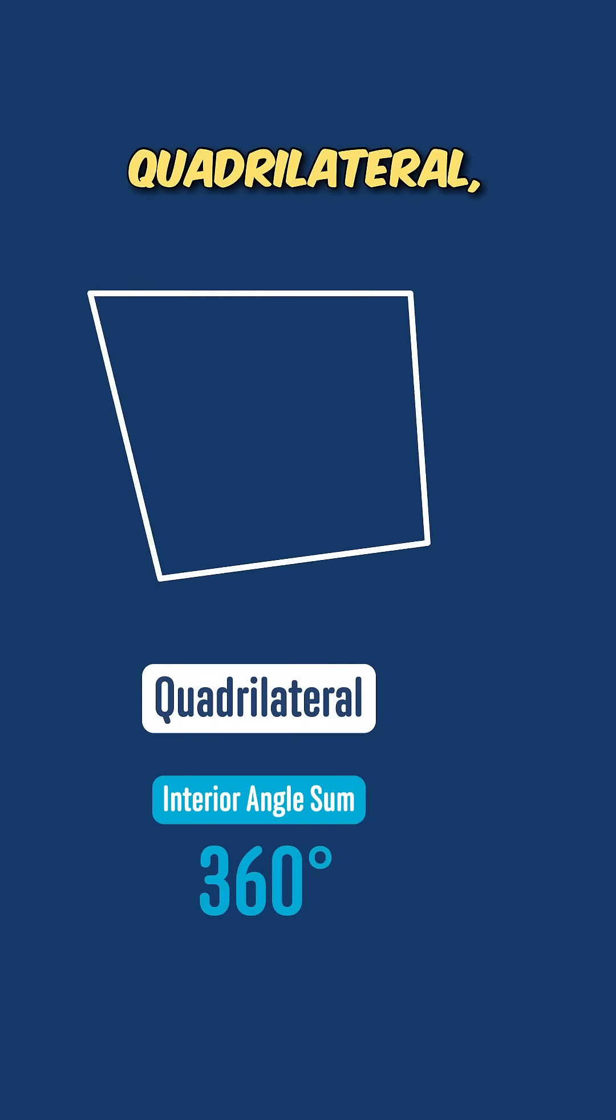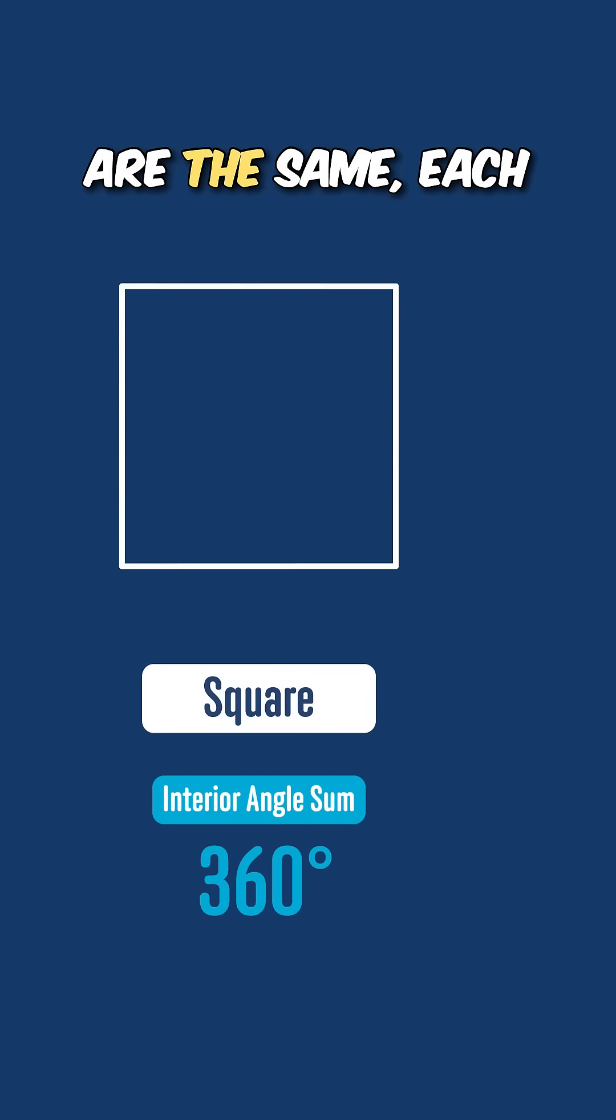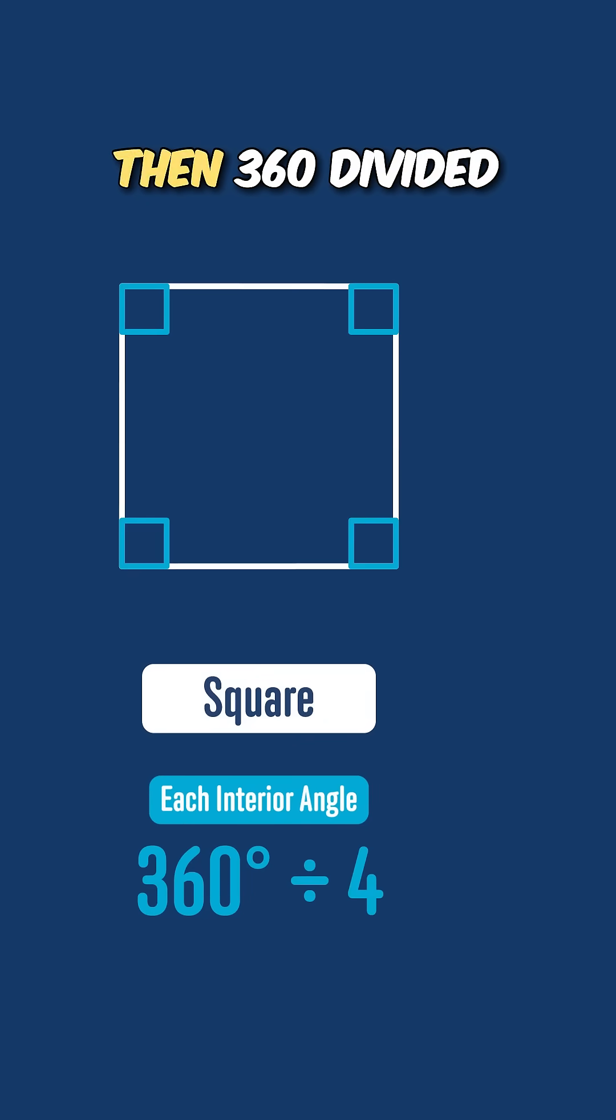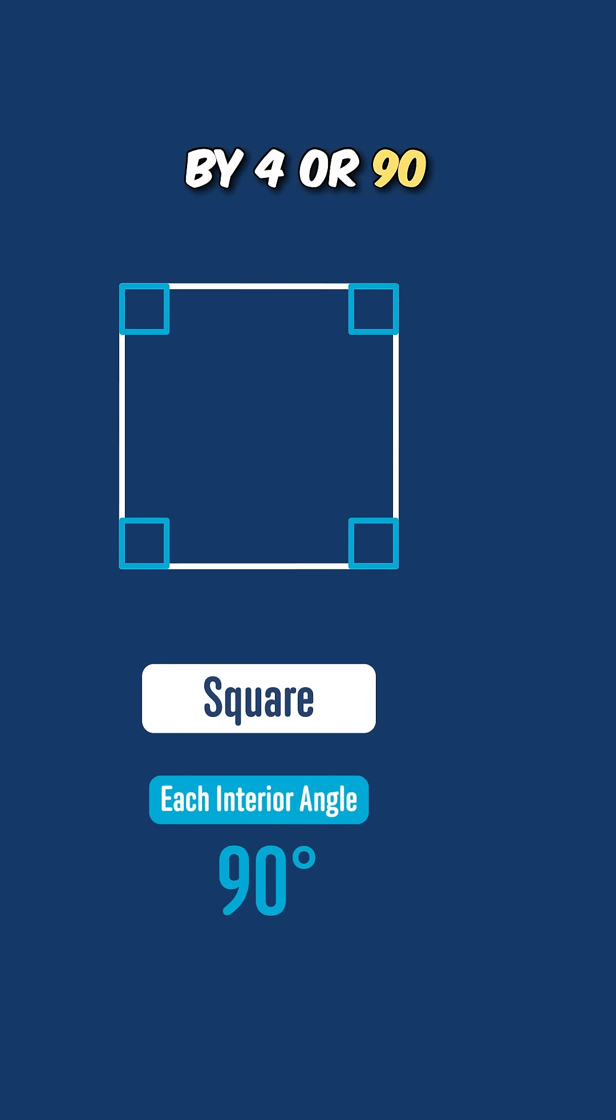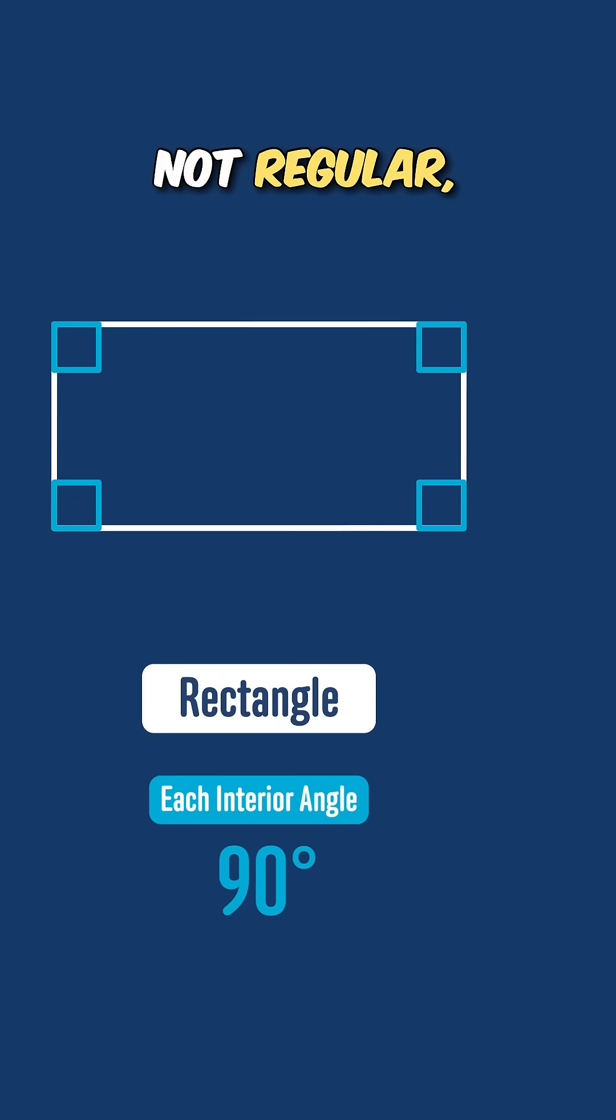In a regular quadrilateral, that is a square where all the sides and angles are the same, each interior angle is then 360 divided by 4 or 90 degrees. Of course that would also be true for rectangles which are not regular but still have all of their angles equal because that's all we need for this result to hold.